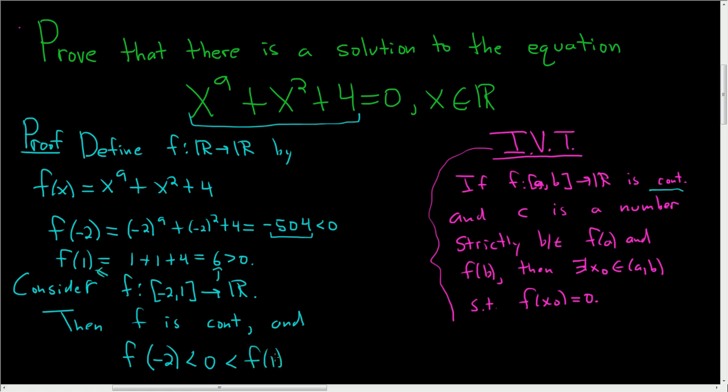In other words, 0 is strictly between f of negative 2 and f of 1, and f is continuous. So by the Intermediate Value Theorem,